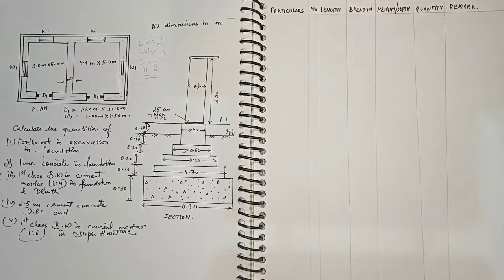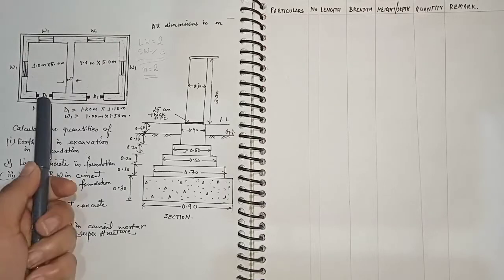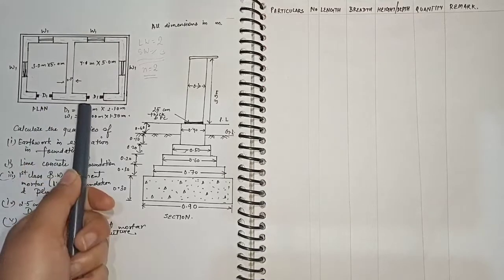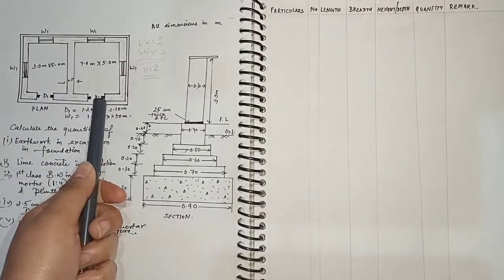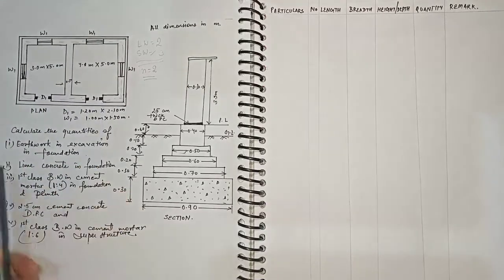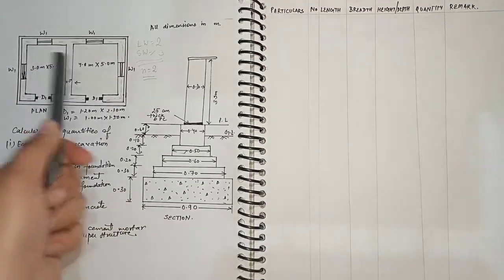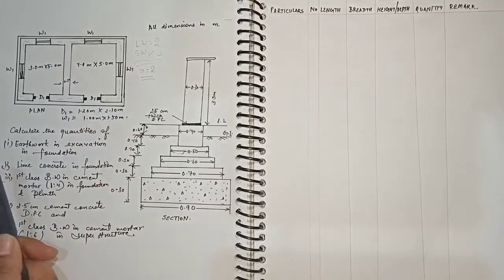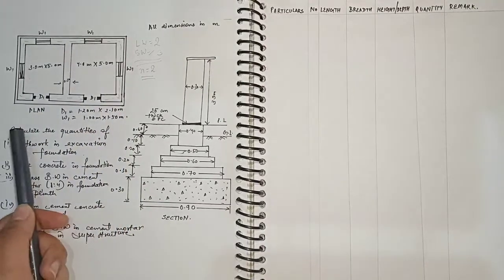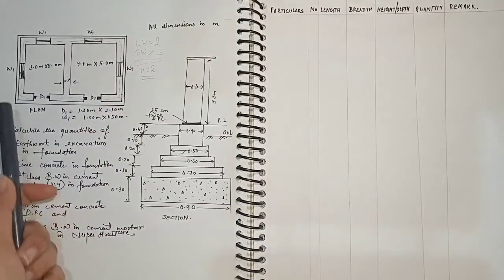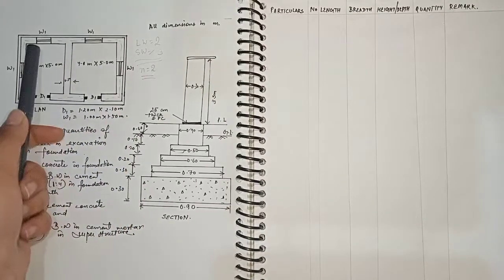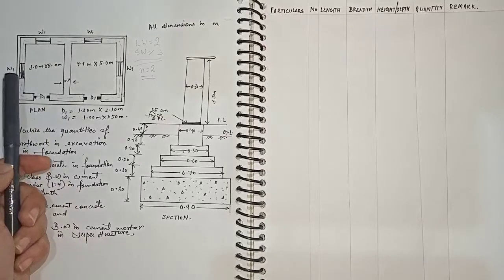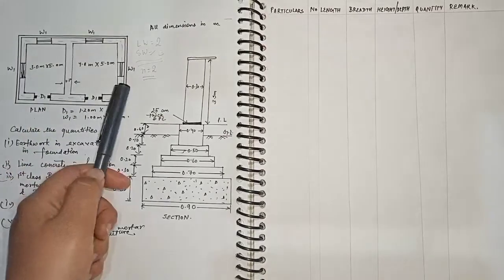We are given a plan and a section plan. We can see two openings here, four windows, number of long walls two, and number of short walls three.